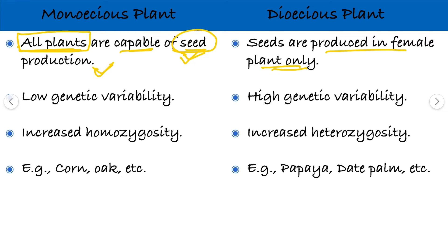So in dioecious plants there is only a 50% chance — 50% of individuals will contribute to seed production. But in case of monoecious plants, there are 100% chances of seed production.